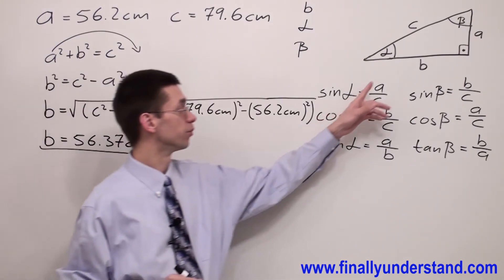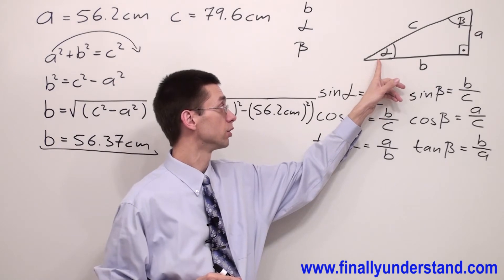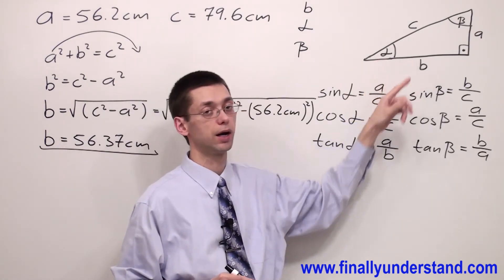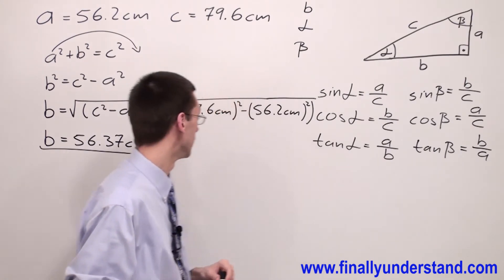So we have b equals 56.37 centimeters. This is the length of side b, which is simply adjacent to angle alpha and opposite side to angle beta.